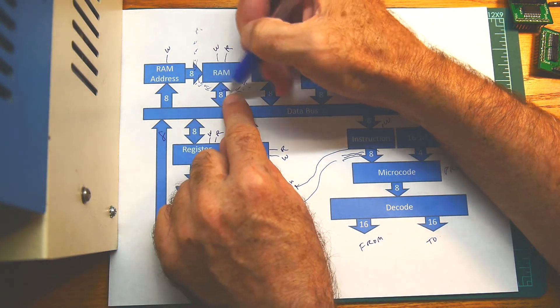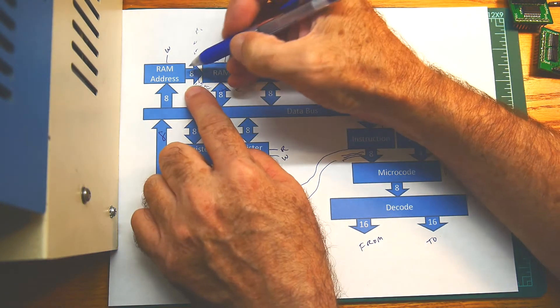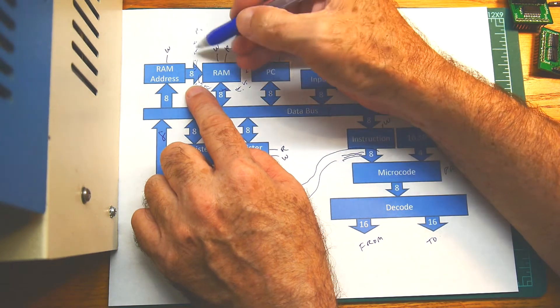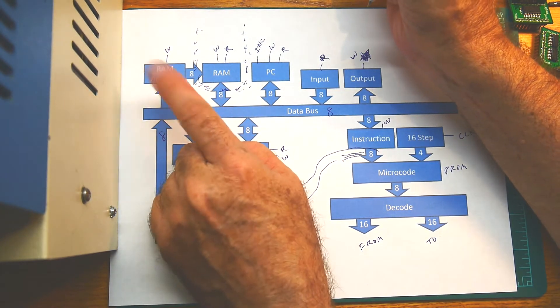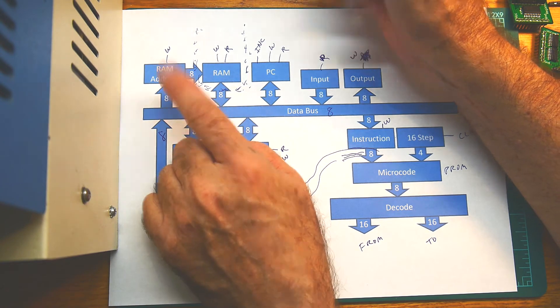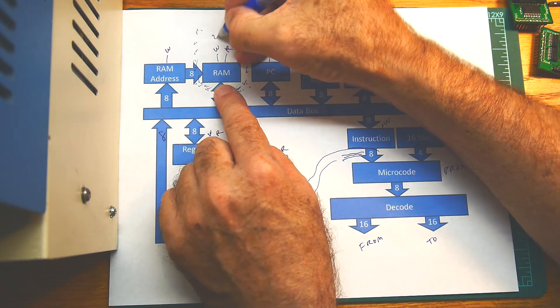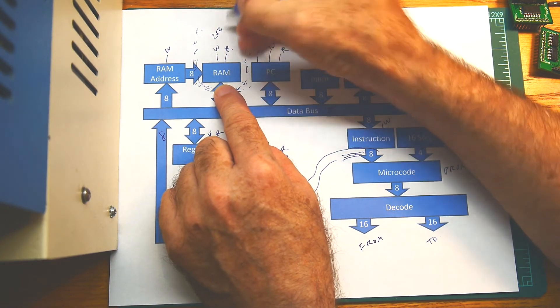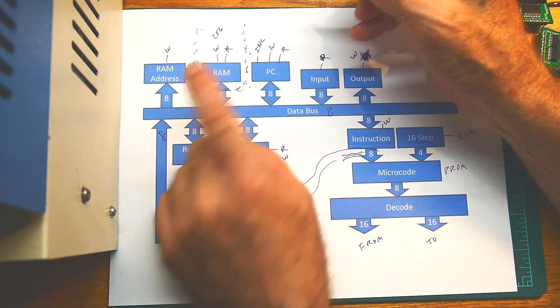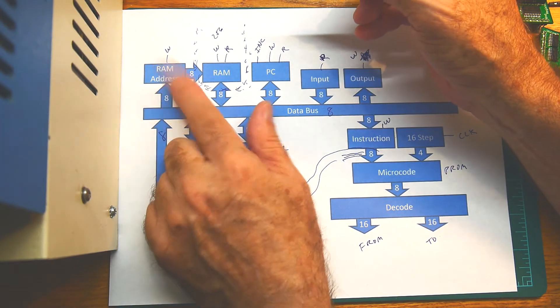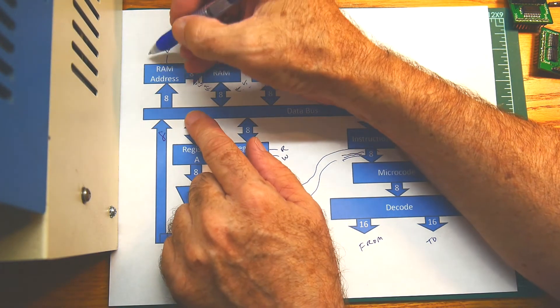And so this would be the address bus, and this would be the data bus. We have an 8-bit address bus and an 8-bit data bus, so we can have 256 bytes of memory.